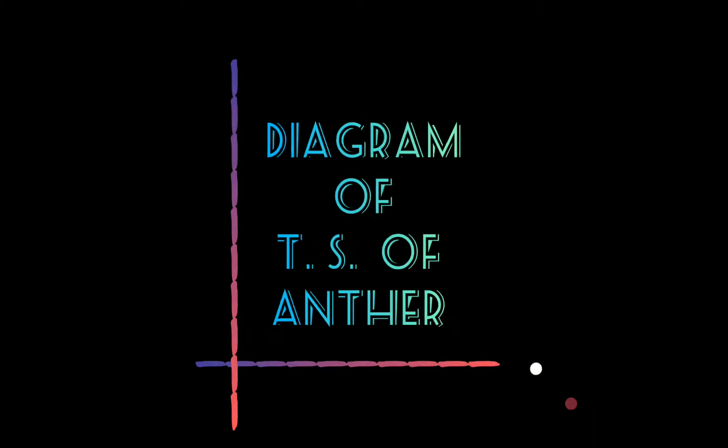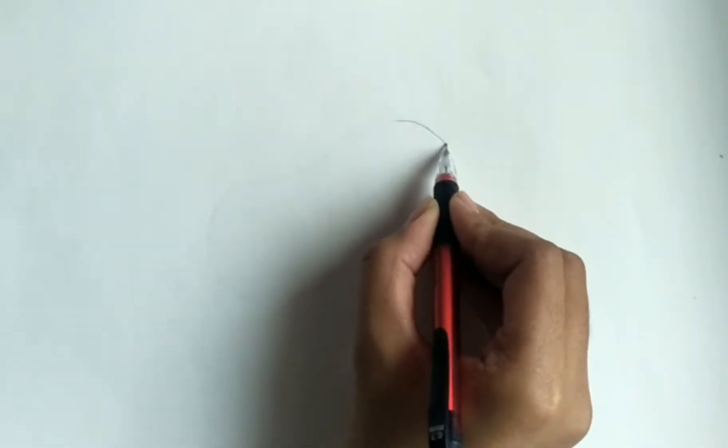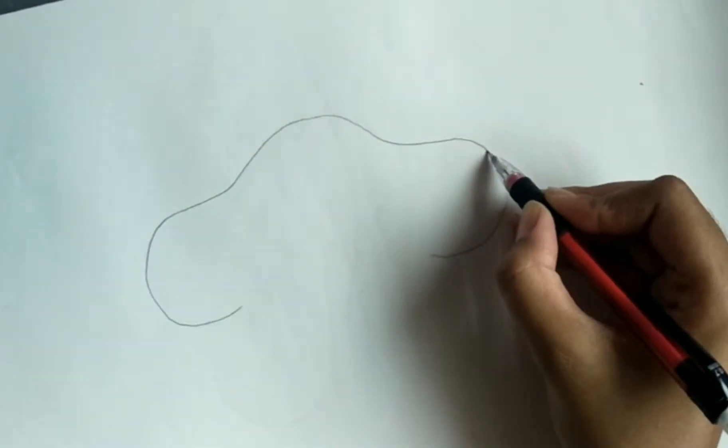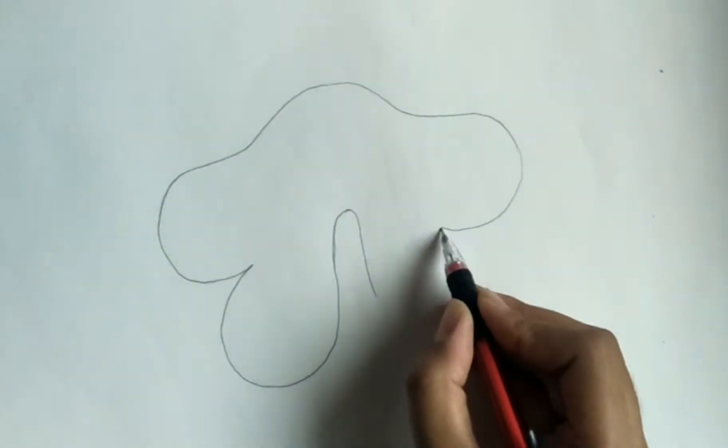Hey there, welcome back to my channel. I'm Shreya with a new video on the diagram of TS of anther. Let's begin. The diagram of anther is quite difficult but small. The anther is usually bilobed with each lobe having